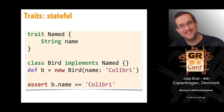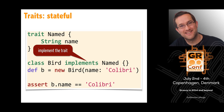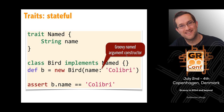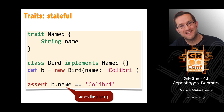Traits can be stateful using the usual Groovy property syntax. If you say 'String name' in a trait, you get a getter, setter and backing field. You implement the trait, give the bird a name using the usual Groovy named-argument constructor — which calls the default constructor and setters via map-like notation — and you can double-check that the name property is accessible, inherited from the Named trait.